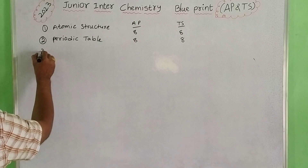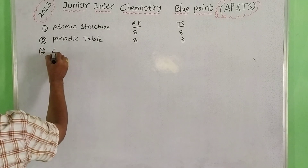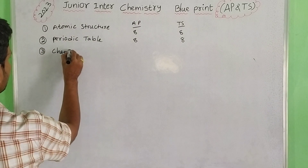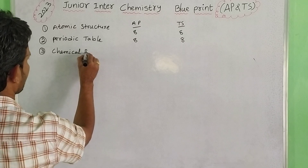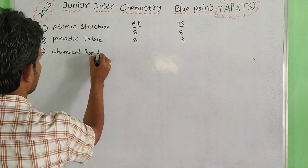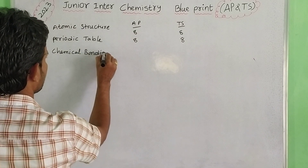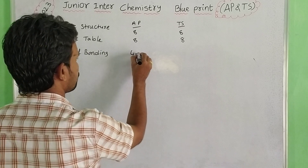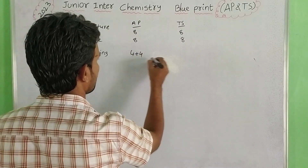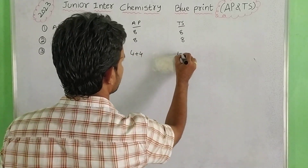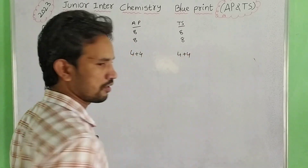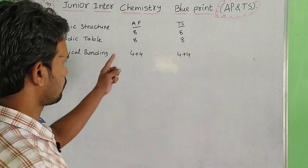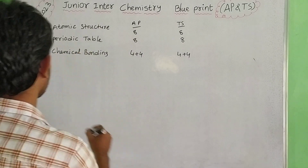Next, the third lesson: chemical bonding. Chemical bonding has a majority of 4 plus 4A, so 4 plus 4 — that is 8 marks weightage. So maximum 4 plus 4 for chemical bonding.